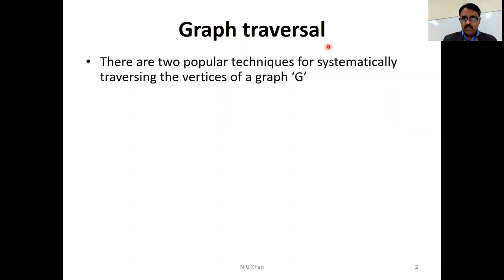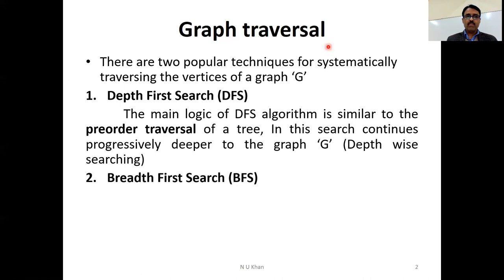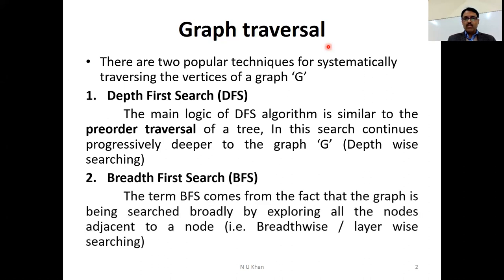There are two methods for traversing a graph. The first one is Depth First Search. In DFS, traversal starts from a starting node, and after that we choose any neighbor of that node and continue that process — a depth-wise approach. We go to the depth of the graph, then start backtracking. In Breadth First Search, the graph is searched layer-wise broadly, by exploring all the nodes adjacent to a starting node. So the traversal is breadth-wise, layer-wise searching.